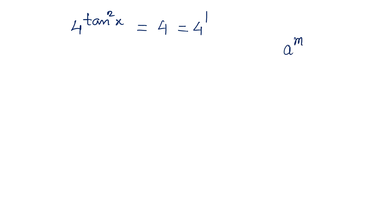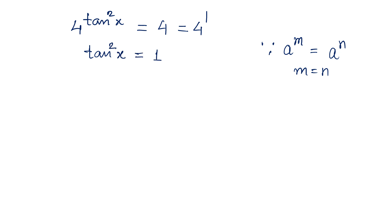Since a^m = a^n implies m = n, we can apply this property. So tan²x = 1, which means tan x = ±1.